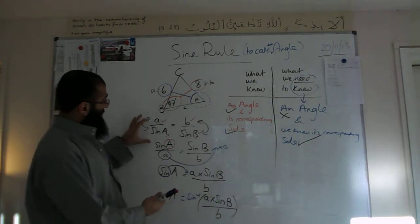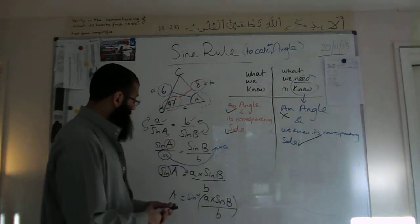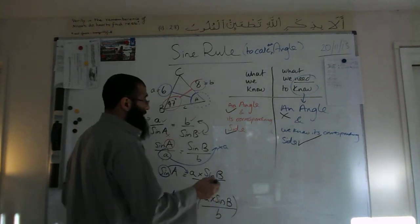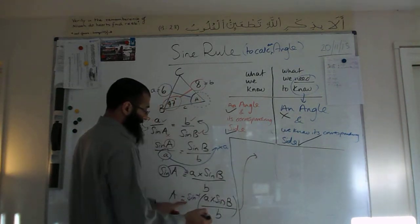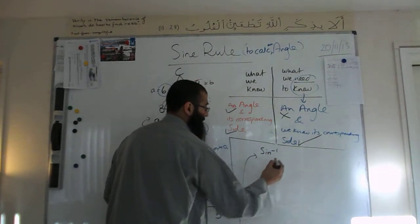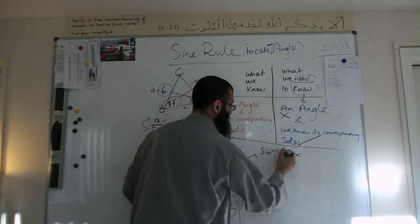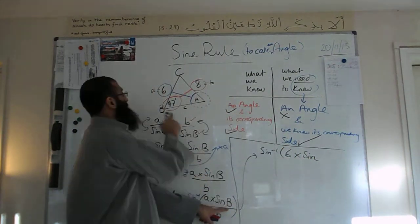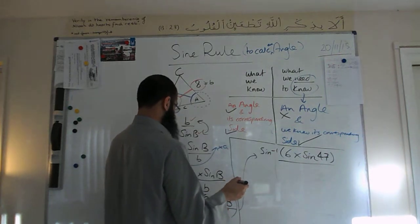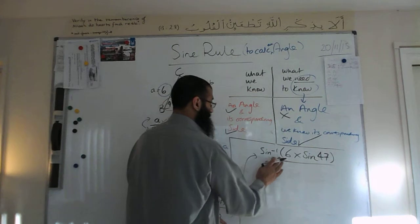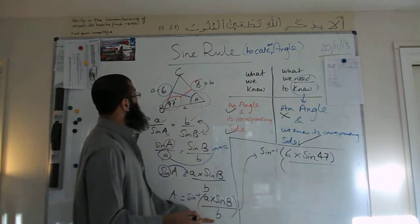Now that we have identified the correct formula, turned it upside down on both sides, and rearranged in two steps, we are ready to insert our values. So: A equals sine to the minus one of — the a value is six, times sine of big B where big B is 47 degrees, divided by little b which is eight.